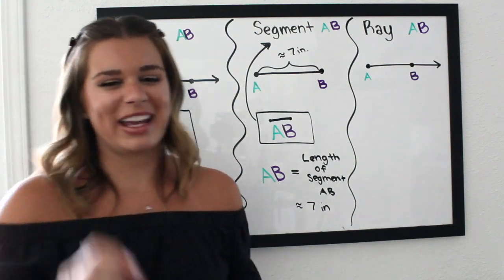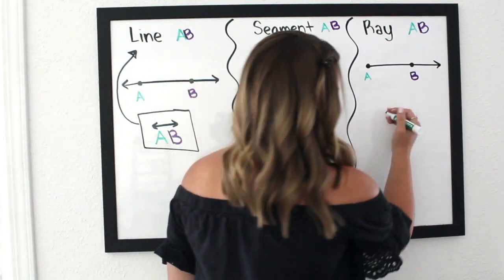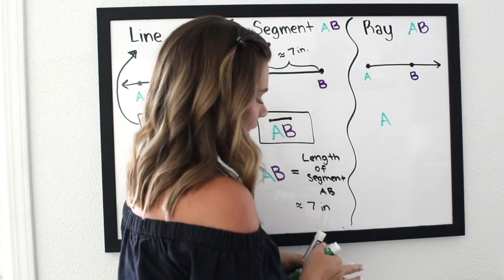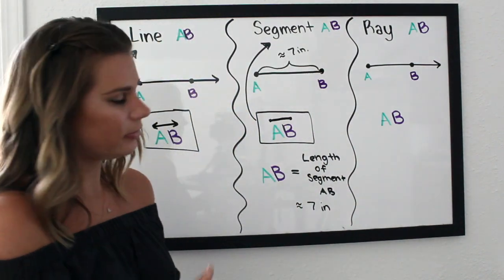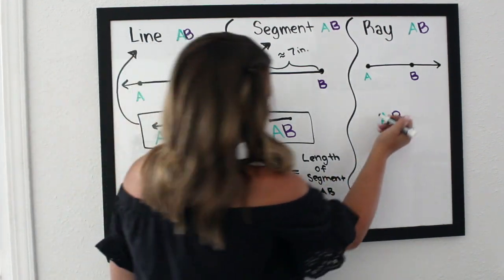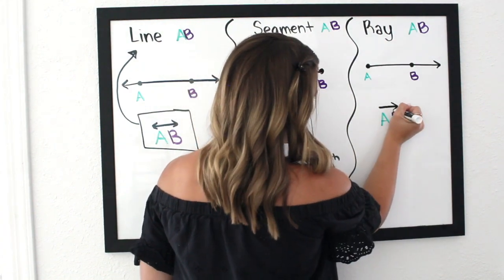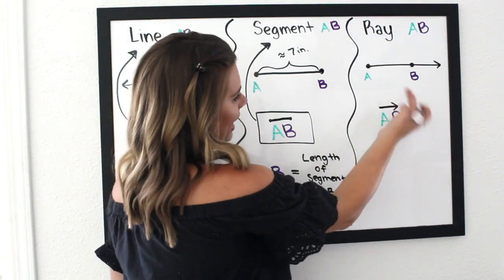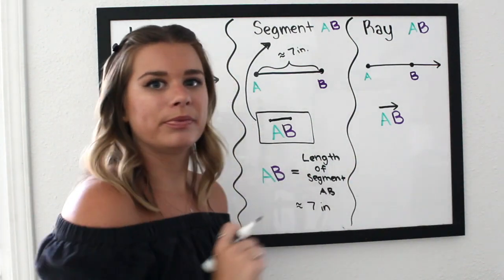You have to be careful with ray notation because order matters. For ray AB, you write AB above which you draw a half-arrow: no arrow on the A side because A is the endpoint, but an arrow on the B side because the ray continues past B. The arrow appears above the letter that the ray goes through.